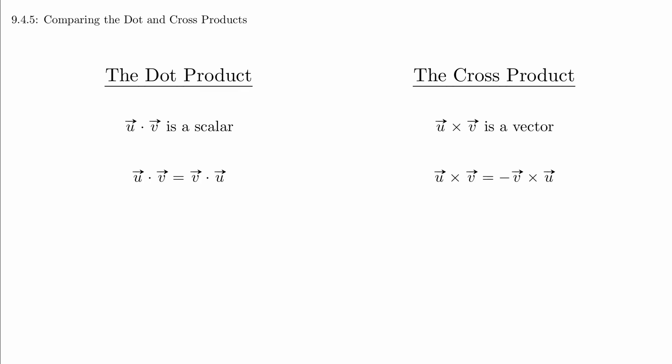The dot product is commutative, but the cross product is not. Technically, we would say that the cross product is anti-commutative or skew-commutative because you get the negative result when you swap the order.